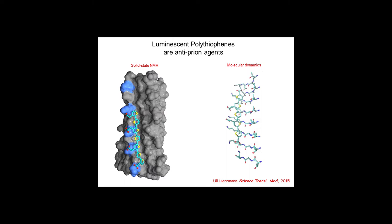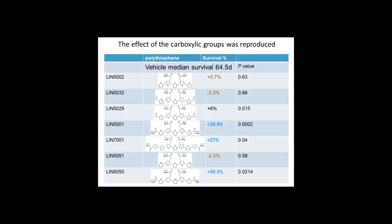And then, Amedeo Caflisch did molecular dynamic simulations where he actually measured the so-called unbinding energy, the actual energy that it takes to wrangle the polythiophene out of the prion fibril. And this looks like a really bad YouTube homemade movie, but actually it took a long time for a supercomputer to actually calculate this.